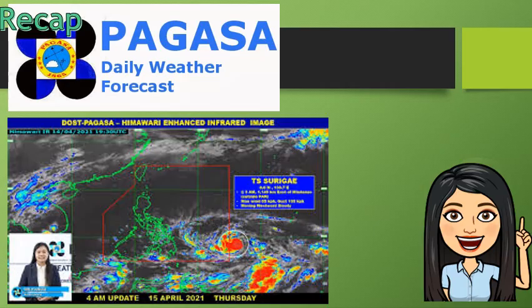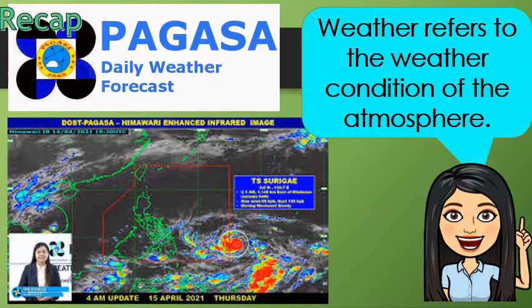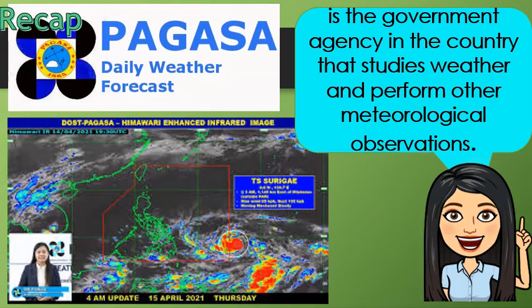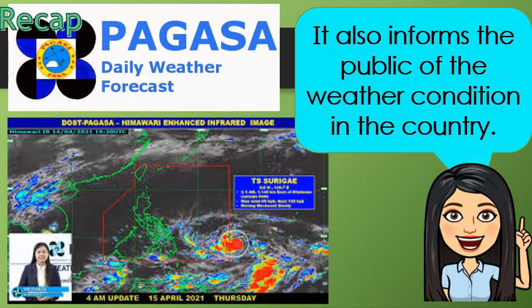Last week, we learned about weather. Weather refers to the condition of the atmosphere. Do you still remember what is the meaning of the acronym PAG-ASA? PAG-ASA stands for Philippine Atmospheric Geophysical and Astronomical Services Administration. It is the government agency in the country that studies weather and performs other meteorological observations. It also informs the public of the weather condition in our country.